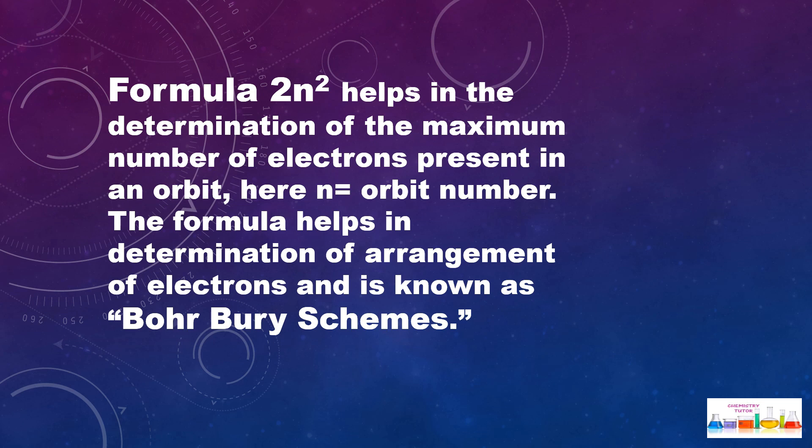There is a formula 2n², which is actually Bohr's formula. Formula 2n² helps in the determination of the maximum number of electrons present in an orbit. Here n is equal to orbit number. The formula helps in determination of arrangement of electrons and is known as Bohr-Bury schemes.